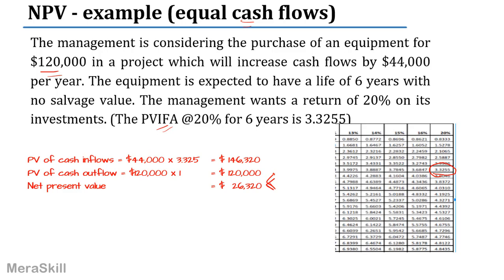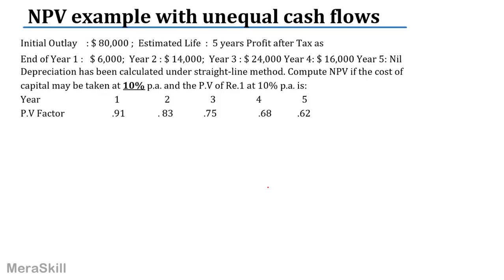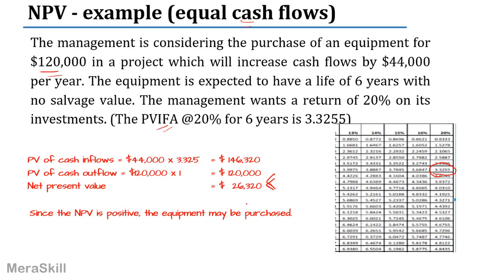Now, since the management is considering this — do you think the management should go ahead with it? Yes. Why? Because the NPV is positive, the equipment should be purchased.